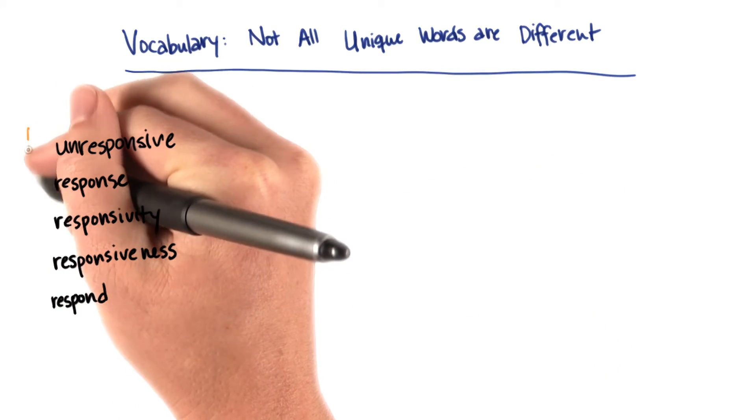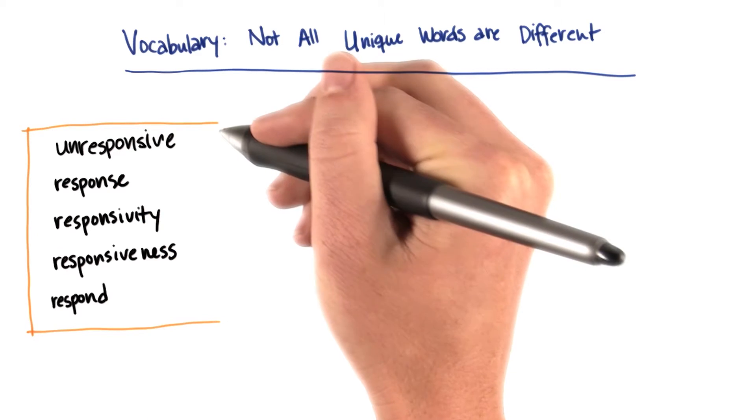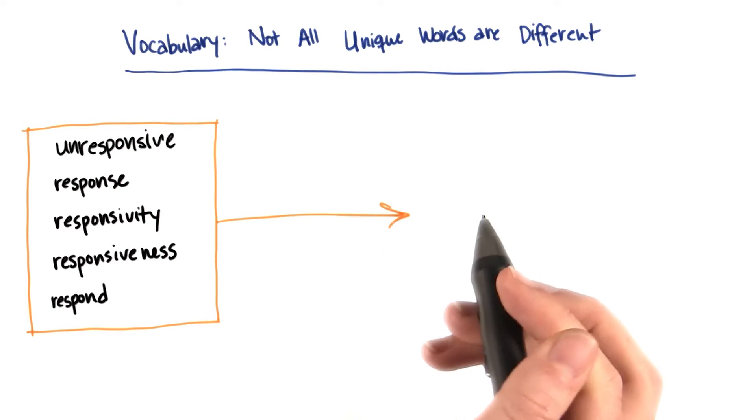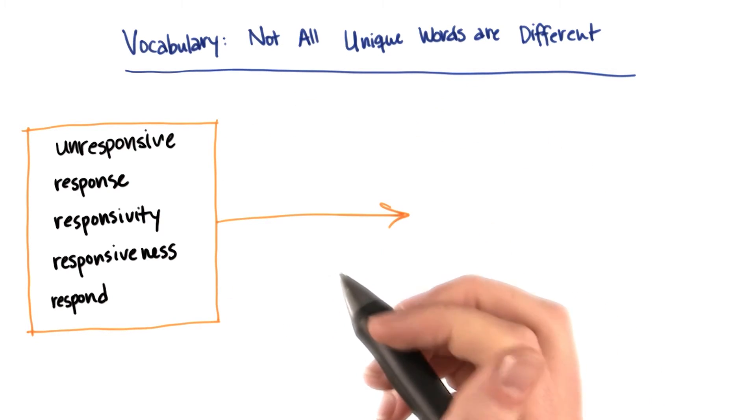Luckily for us, there's a way of bundling these up together and representing them as a single word. And the way that happens is using an algorithm called a stemmer.